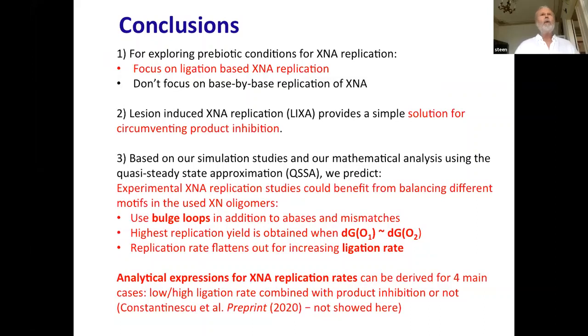So what does that mean? Well, number one, I really believe that if we want to understand the origins of life, if we want to make simple protocells that are not using modern molecules, we should focus on ligation based XNA replication, not base by base replication. Second, by using this LIDA or LIXA, depending on what kind of XNA that's your favorite one, we can actually circumvent that. And the main thing we found was that we need to make sure that the free energy of the two templates is comparable or as close to the free energy of hybridization of the two oligomers. And further we found that by making this bulge more profound than the experimental results, we should be able to have significantly higher rates. And we have some analytical expressions that I didn't have time to discuss, but thank you. I think that's it.